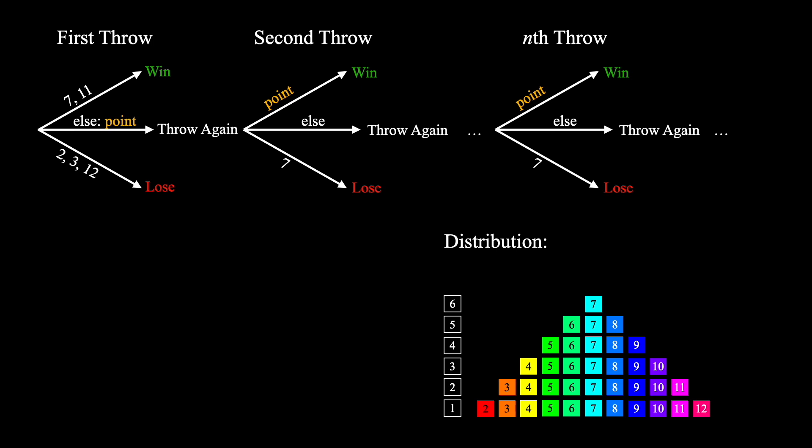Moving on, let's now model our first throw. The probability that we win in our first throw is simply the probability of 7 plus the probability of 11. This gives us the probability of winning in the first throw as 8 by 36. Similarly, we can compute the probability that we lose in our first throw as the probability of 2 plus 3 plus 12. Adding these up, we get that the probability of losing is 4 by 36.